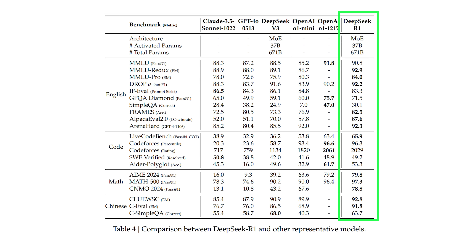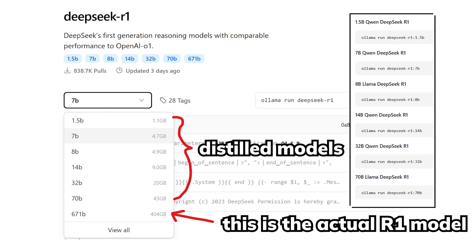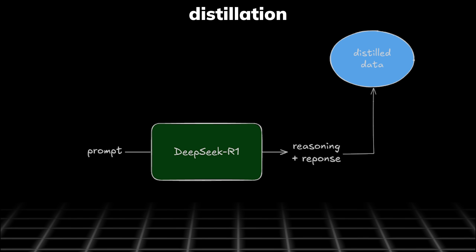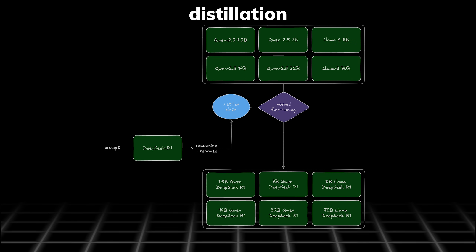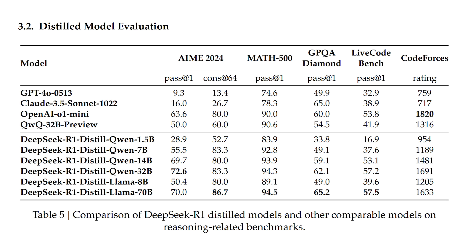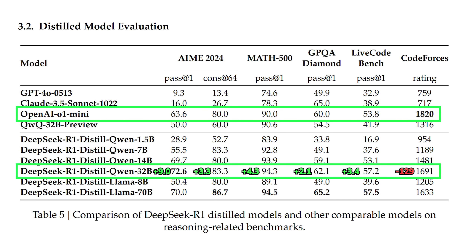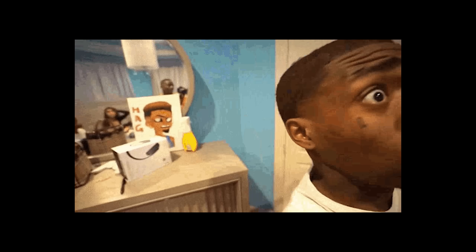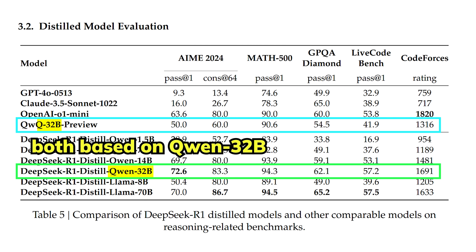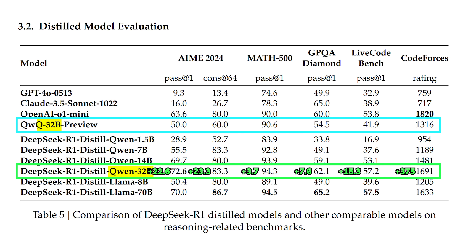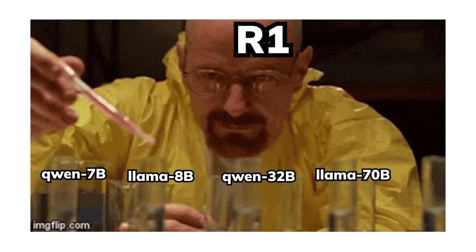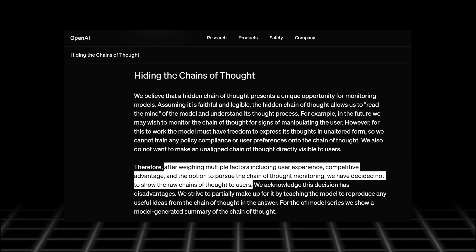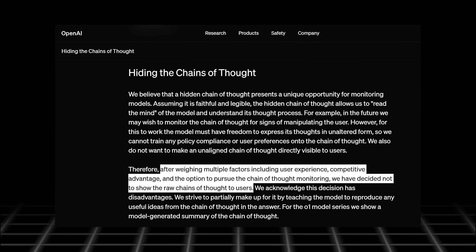There is only one DeepSeek R1 model — the smaller models on Ollama are distilled models. Distillation means they had DeepSeek R1 generate samples containing its reasoning process, then fine-tuned smaller models like LLaMA 3-8B and Qwen 2.5-32B on those samples to replicate R1's reasoning without needing RL themselves. Surprisingly, the reasoning process gave these models an insane boost — the distilled Qwen 32B beats O1-mini across the board except coding. Since Qwen and its distilled version share the same base model, we can fairly judge reasoning quality: the DeepSeek-distilled reasoning differs by 22.6% accuracy, showing how effective distilling reasoning from a larger model is. This is why OpenAI was hiding their chain of thought — there is no moat in this paradigm at all.